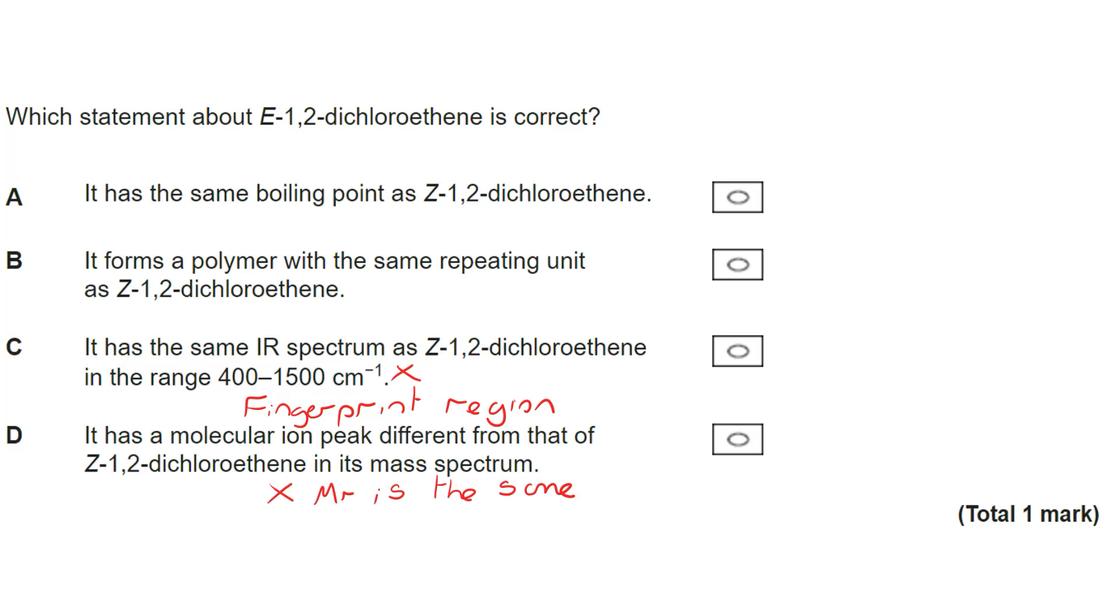It won't have a different molecular ion peak because it's still got the same relative molecular mass. So it's not D. It won't have the same boiling point. And that's actually because the bonds are arranged differently. There's a different arrangement in space, and that can affect the surface area. And that can therefore affect the intermolecular forces that exist between them. So there will be differences in boiling point. So we know what the correct answer is.